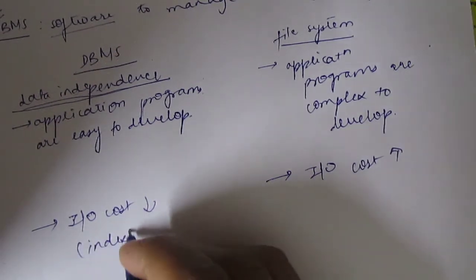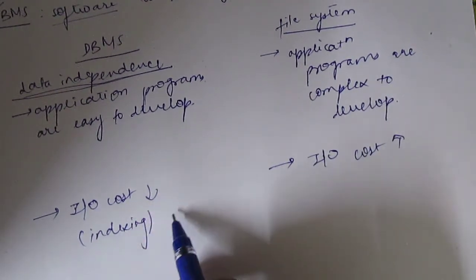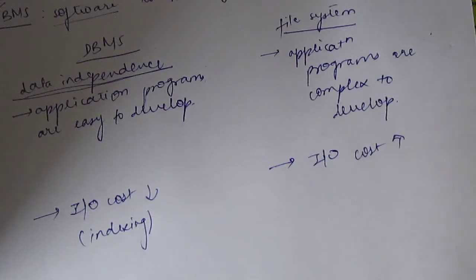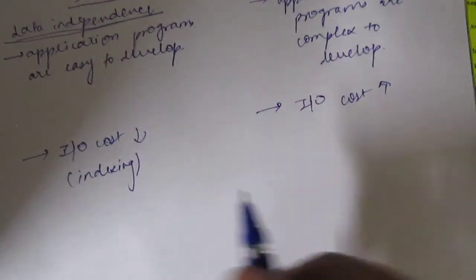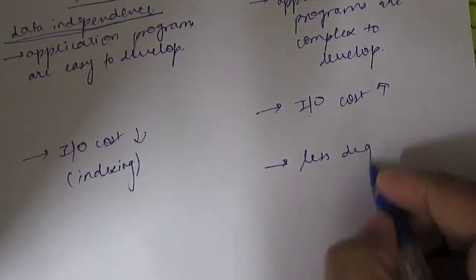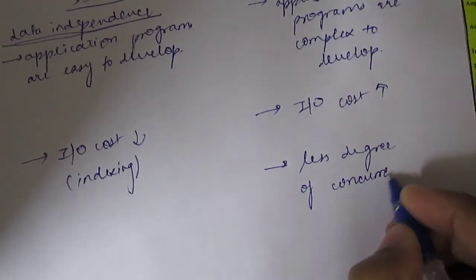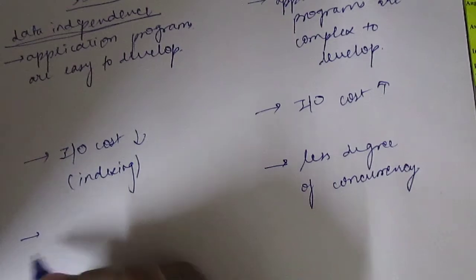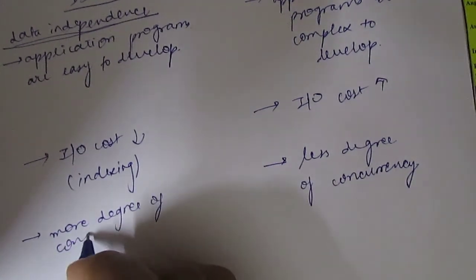A technique used in DBMS is indexing, which we will cover in detail later. We use indexing so that our I/O cost is reduced in DBMS. Also, in DBMS there is a higher degree of concurrency, while in a file system there is a lower degree of concurrency.